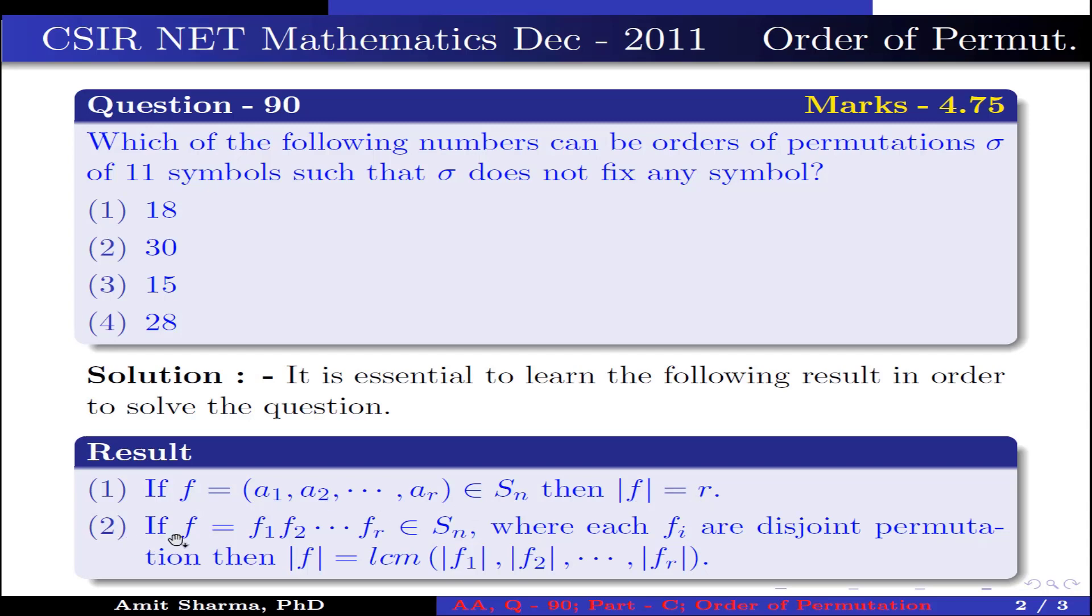Point number two: if the permutation f = f1, f2, ..., fr belongs to Sn, where each fi are disjoint permutations, then order of f is equal to LCM of order of f1, order of f2, up to order of fr.